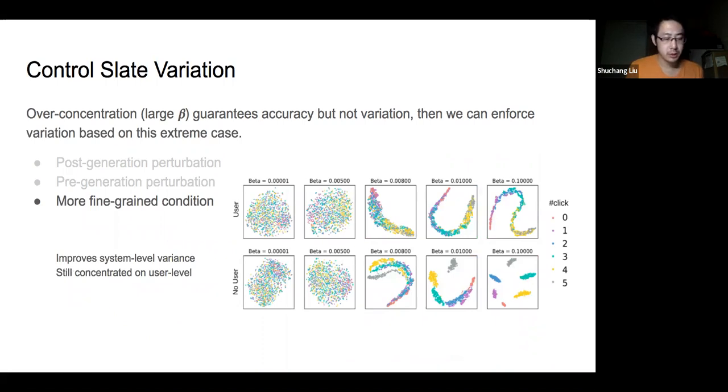Additionally, a nice property of the VAE-based model is the informative encoder. In our experiment, we can use them to observe the slate encoding and see how the slate variance is influenced on the space of latency. Again, we observe the large beta case, which is the over-concentration extreme with high accuracy but low variance.